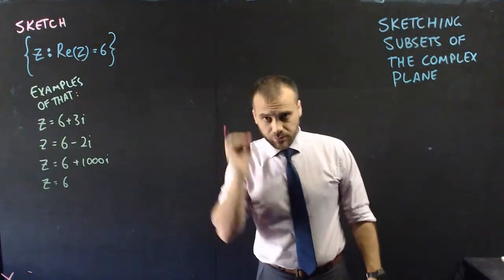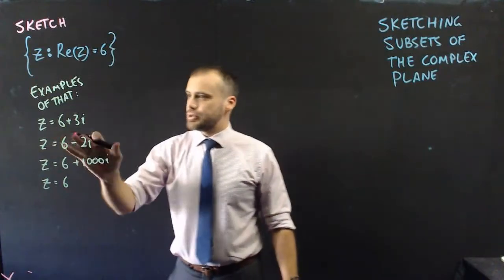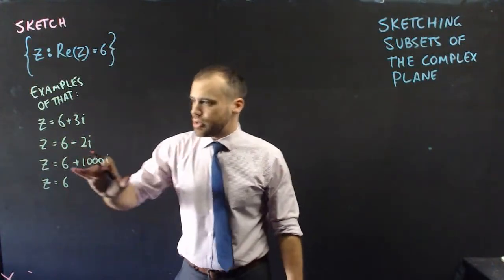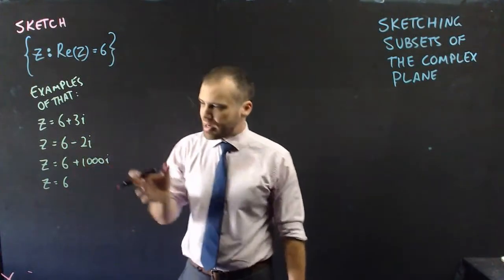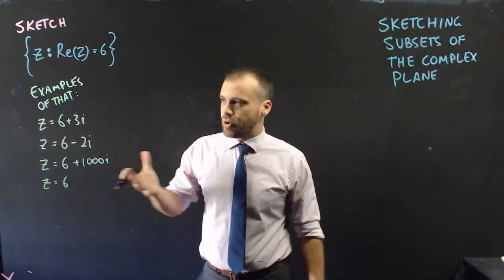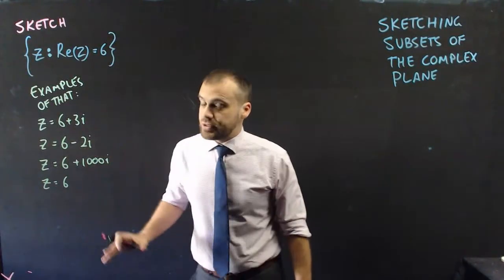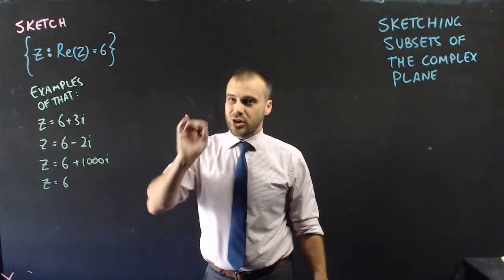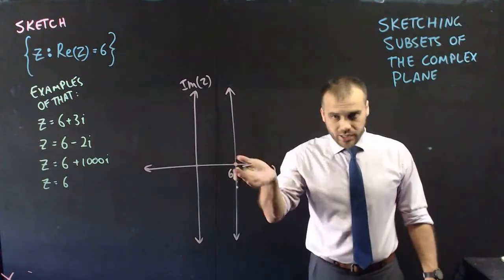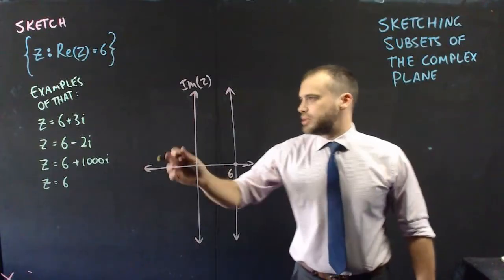Examples of complex numbers that meet this criteria are z = 6 + 3i, z = 6 − 2i, z = 6 + 1000i, and just 6 (or 6 + 0i). I could keep listing them, but that's going to take forever.